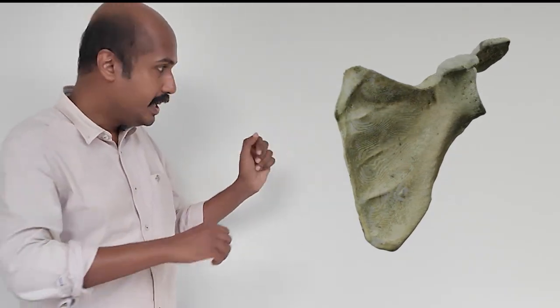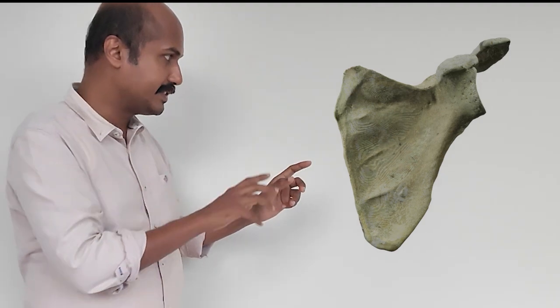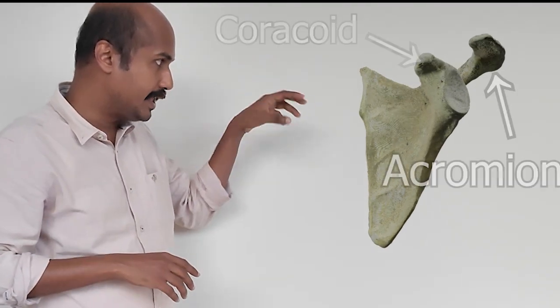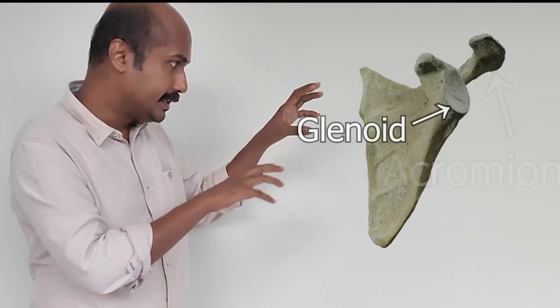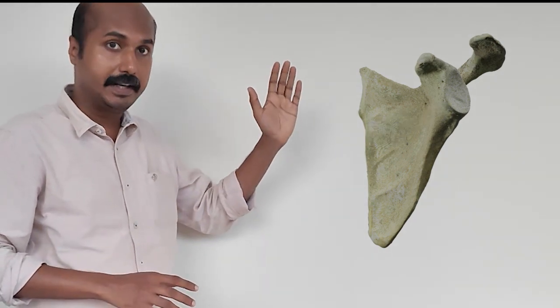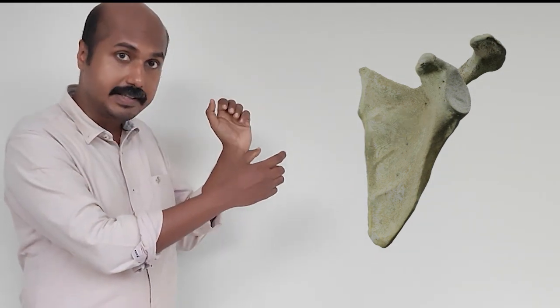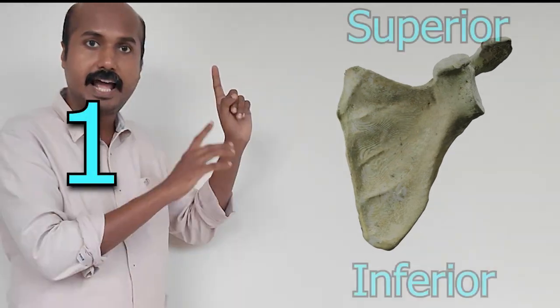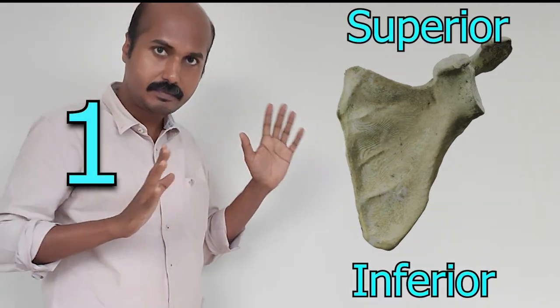As you can see here, there are so many processes of the scapula. This is called the coracoid process, this is called the acromion process, and this is called the glenoid process. All these processes are in the upper end and in the lower end, you are seeing the lower part of that triangle. So you can identify the upper end and the lower end of the scapula.